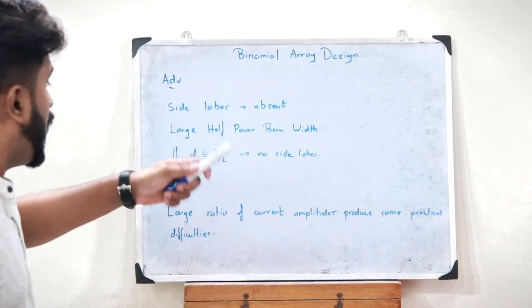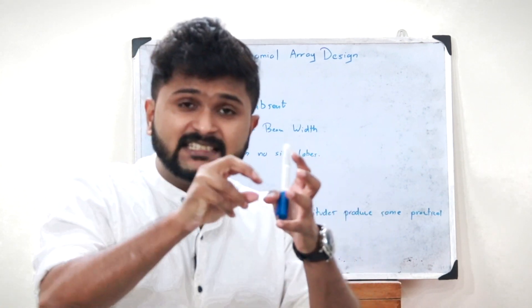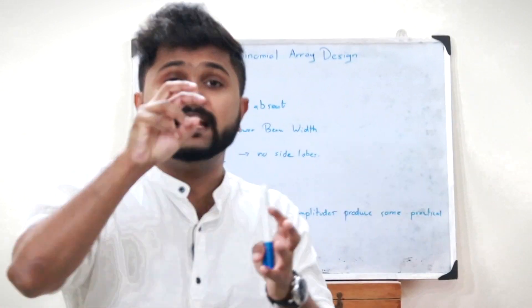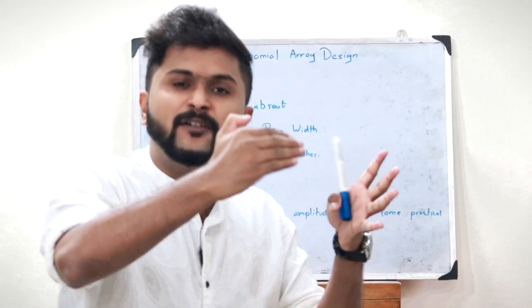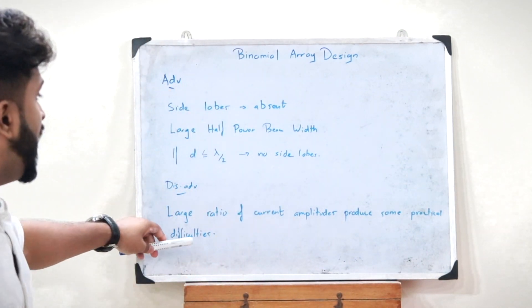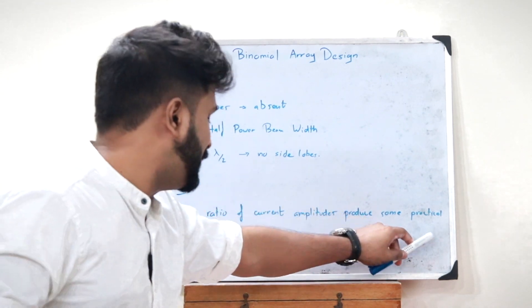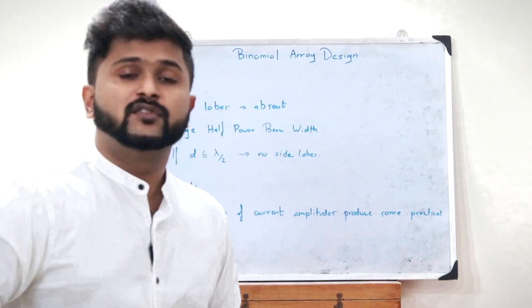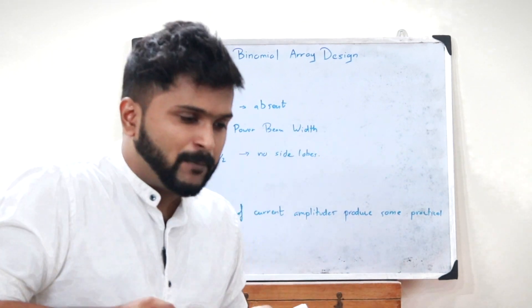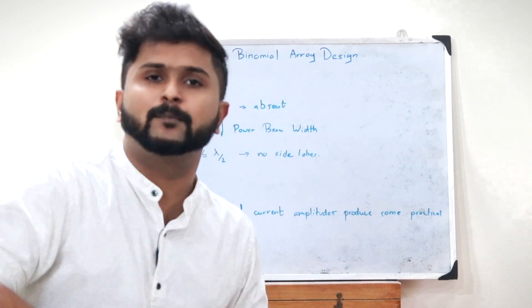The disadvantage of a binomial array is that each antenna element must be supplied with a different amplitude of current. This large ratio of current amplitudes required for the different elements produces practical difficulties in implementation.